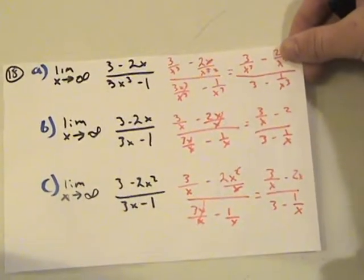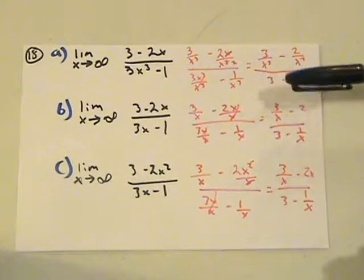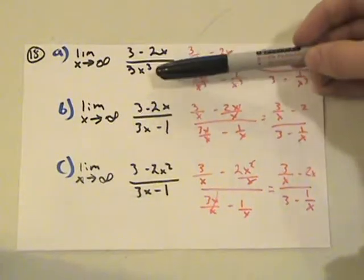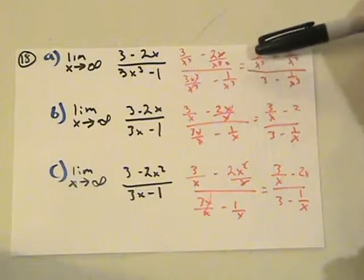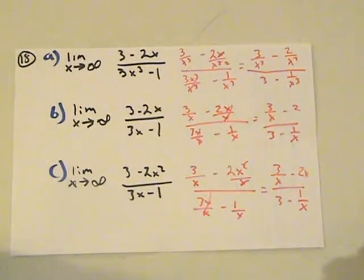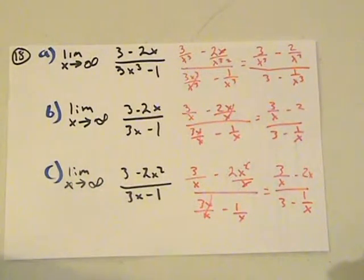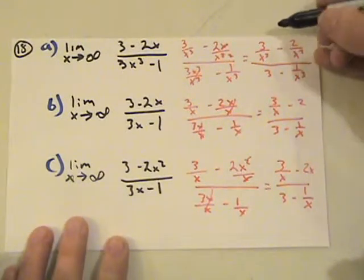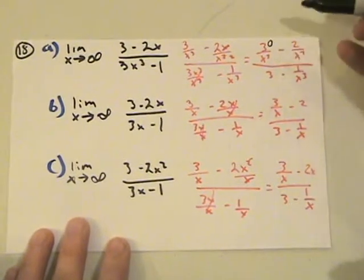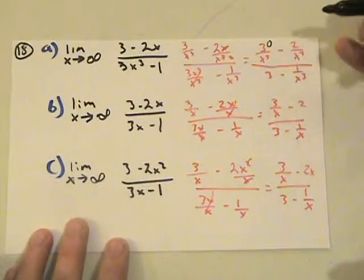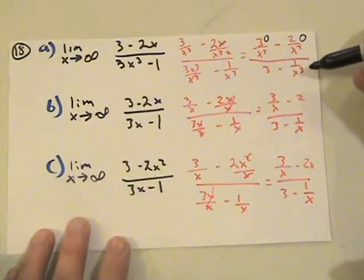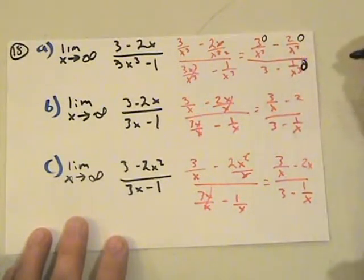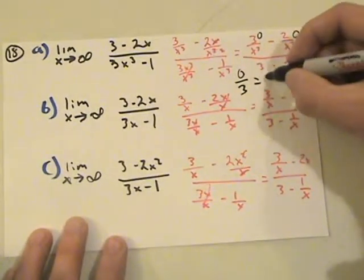Number 18 is asking pretty much the same thing. I always divide or multiply the entire function by the highest power — in part A that's x cubed. When I multiply it out and simplify, I get 3 over x cubed minus 2 over x squared, divided by 3 minus x cubed. In the denominator, the constant divided by x to some power goes to zero, and the other term also goes to zero. So we end up getting zero over three, which equals zero.